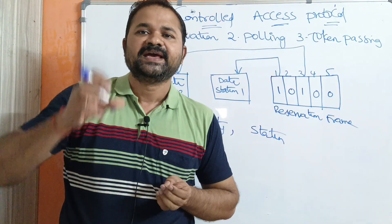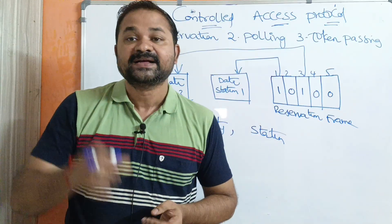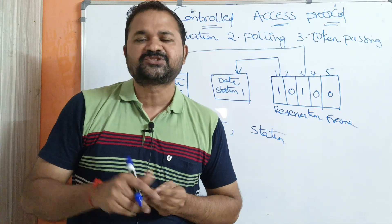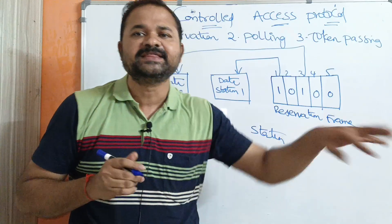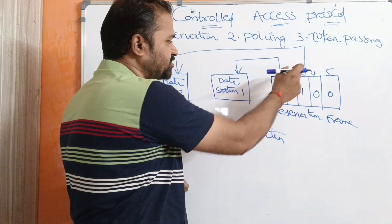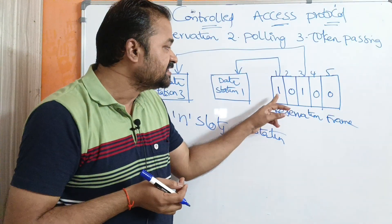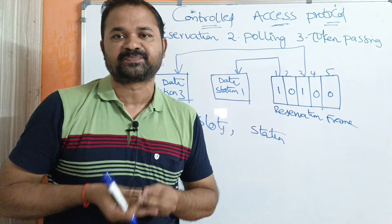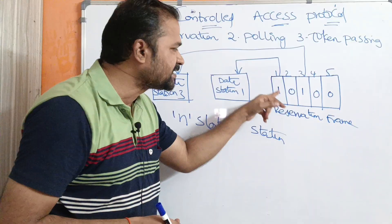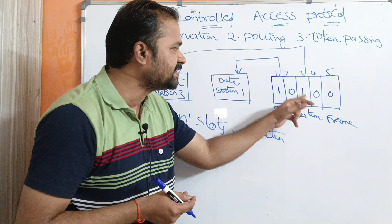So here if a station wants to send a frame, then before sending the frame it has to make a reservation. In order to make the reservation, the corresponding station has to transmit a bit called one in the respective slot. If we observe this, the first station and third station want to transmit frames. So station one transmits a one bit in the first slot, and station three transmits a bit called one in the third slot.